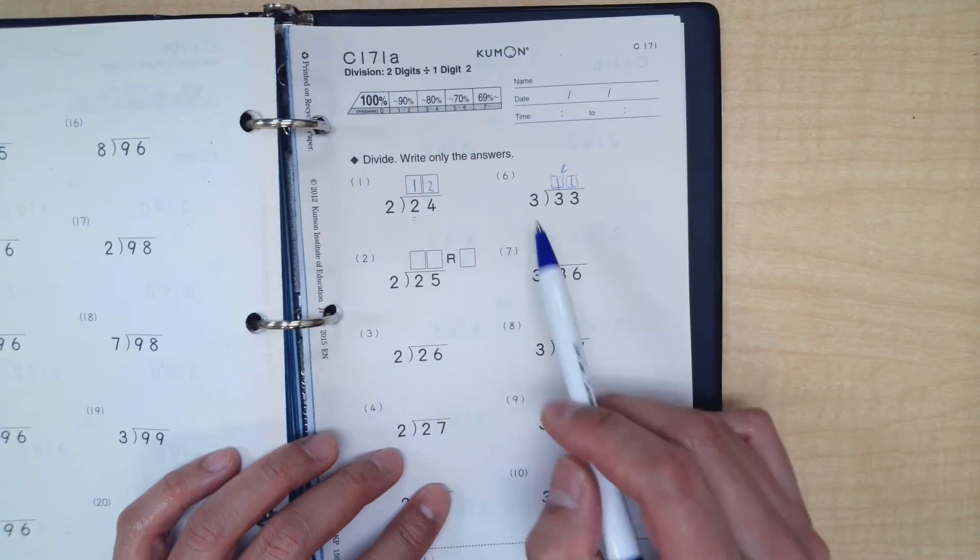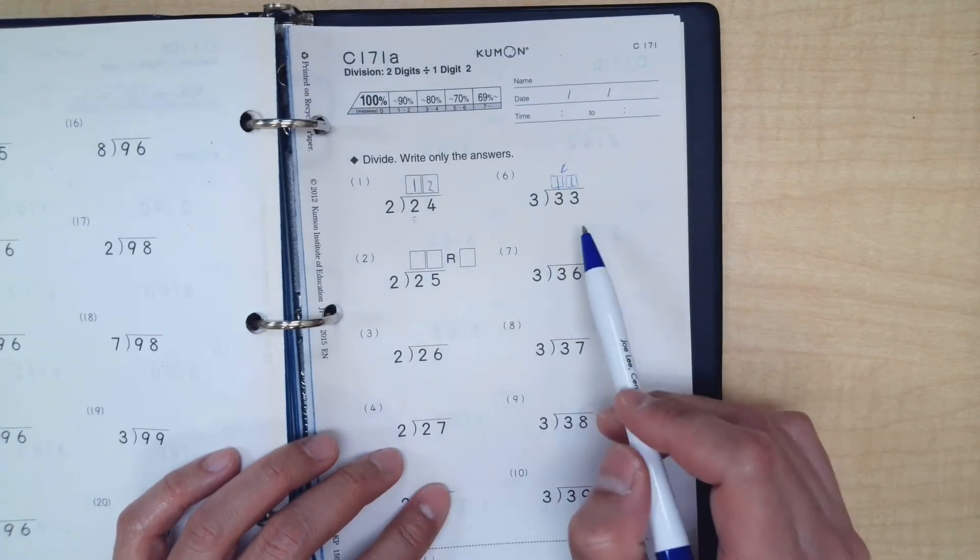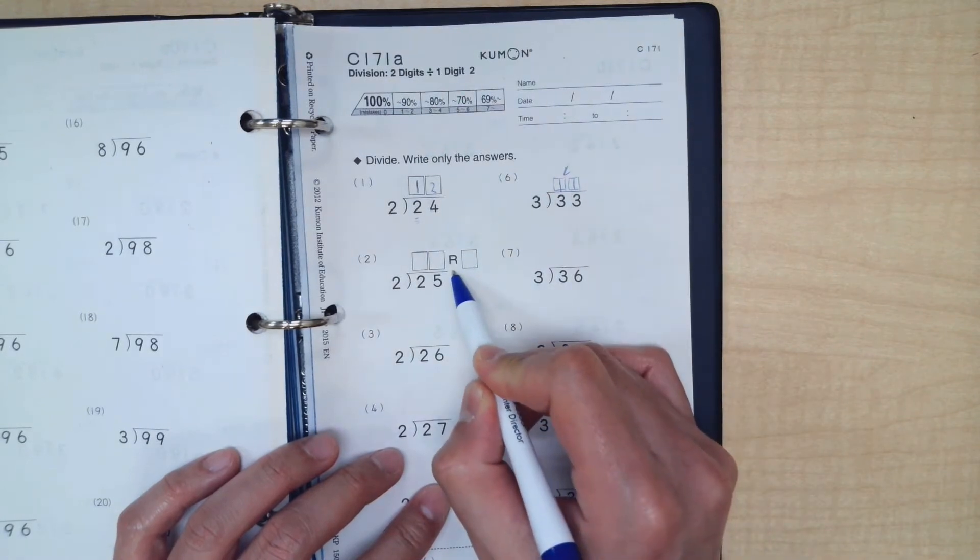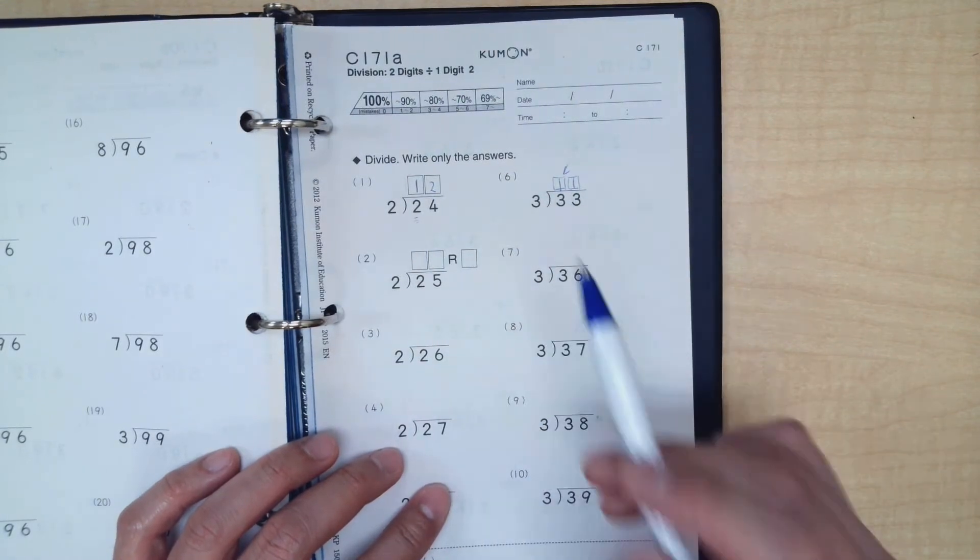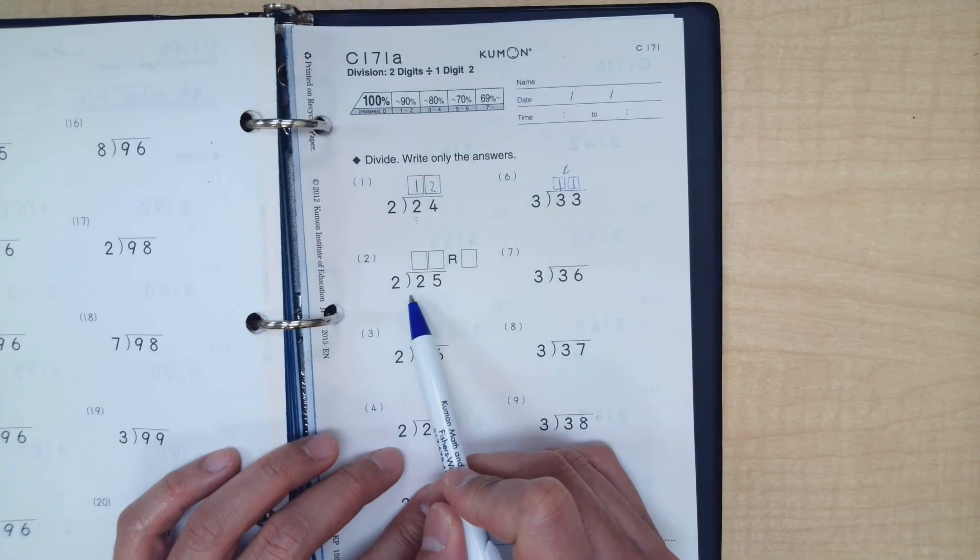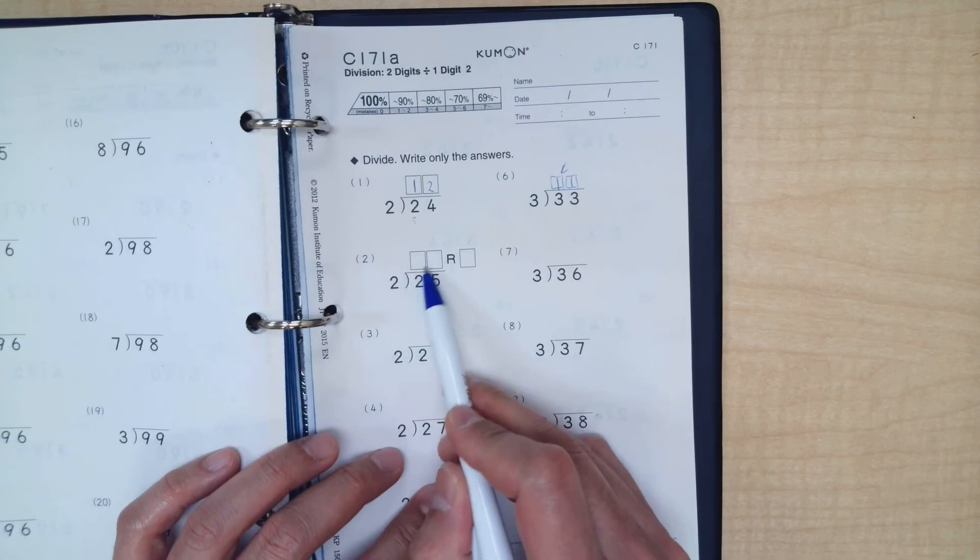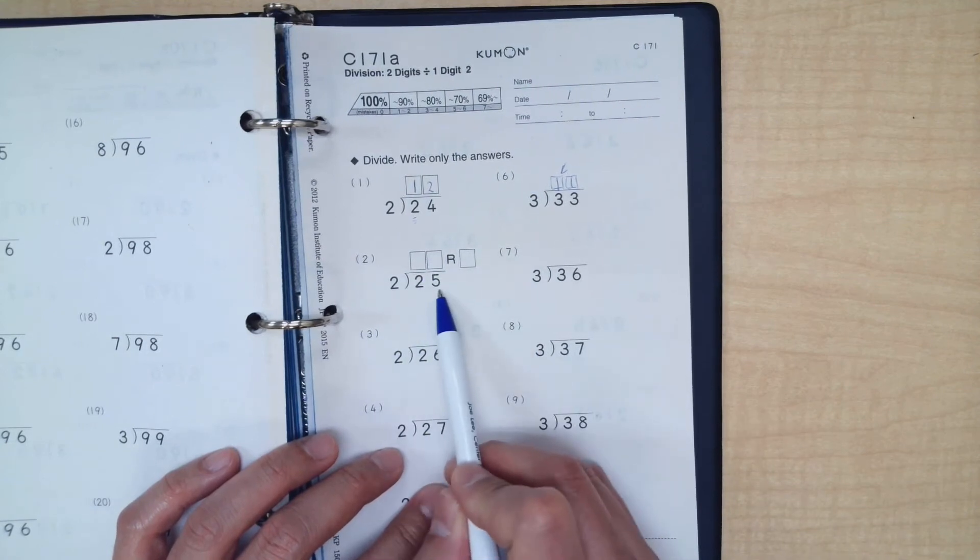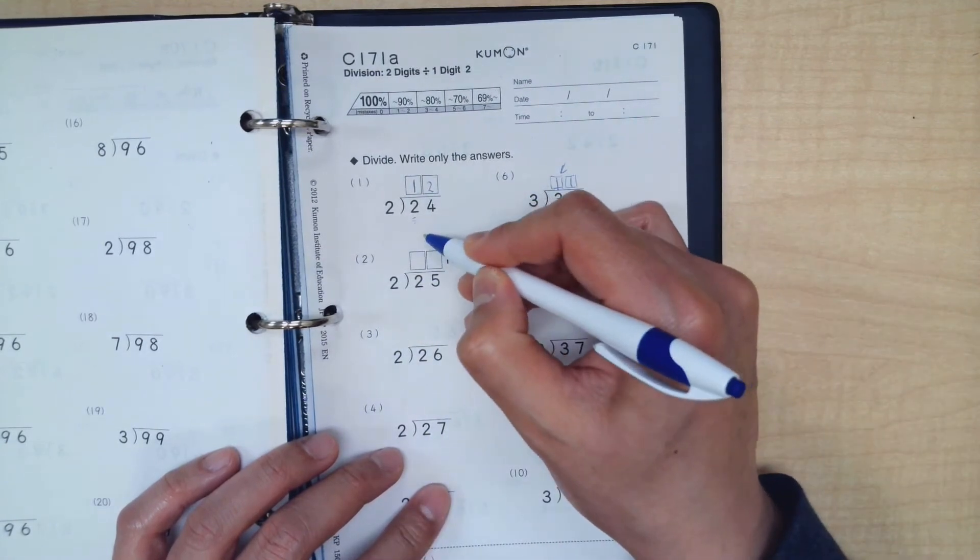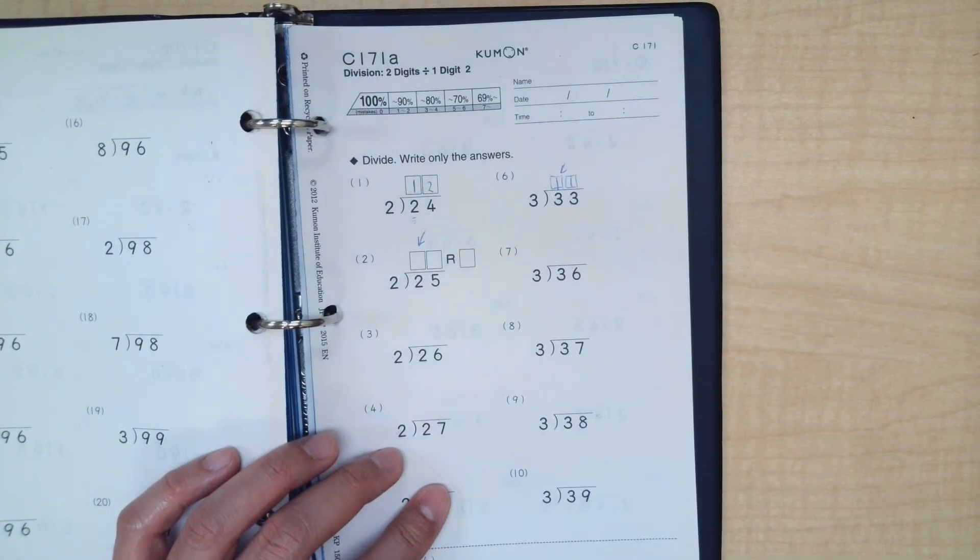But not all problems, as you know, are this clean. Sometimes you would have to work with the remainder because you won't have a clean division like these two problems. For example, let's go to this one where the problem is twenty-five divided by two. Again, you would imagine two spaces, one above each one of these digits.